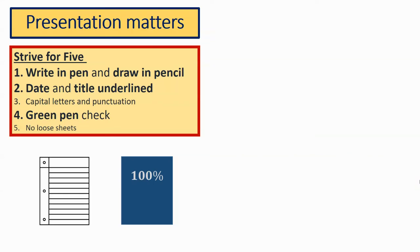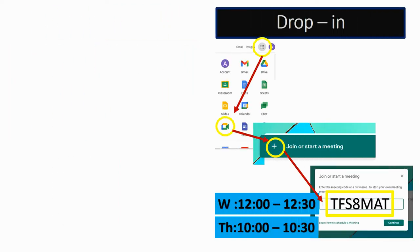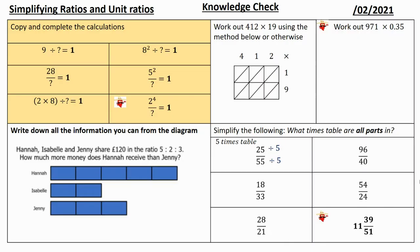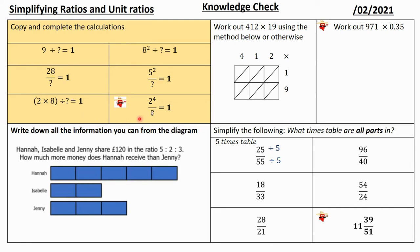Hello and welcome to lesson three. This last week of term - remember: striving for five, writing everything down on paper, green pen for ticking or fixing, and there are two drop-ins today and tomorrow. So the knowledge check as usual, and there are three chilies - you don't have to do the chilies if you don't want to. You can make a choice, but that top left box is really important.